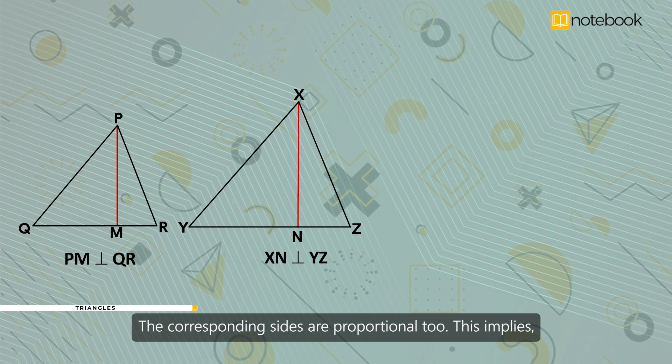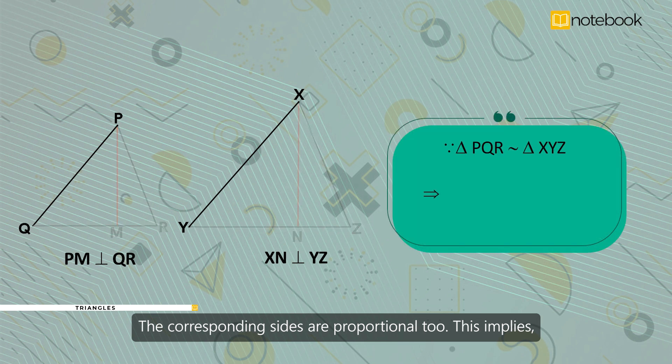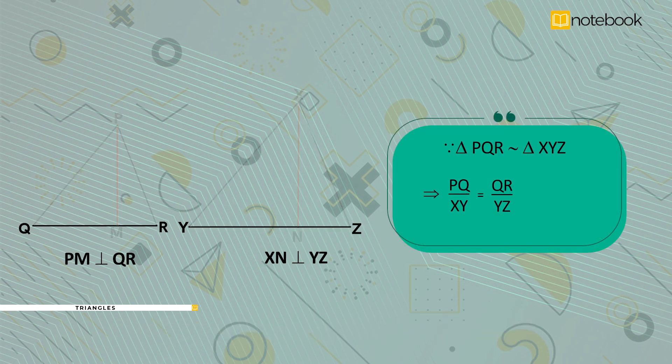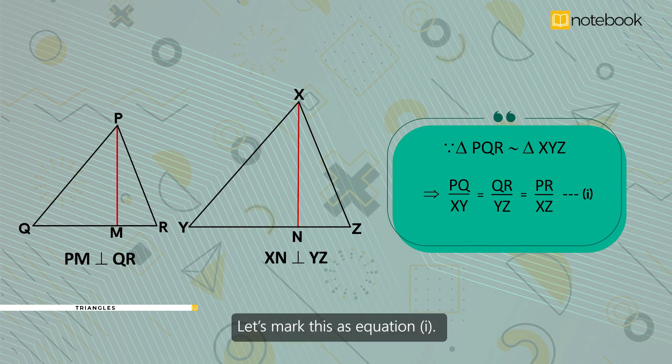The corresponding sides are proportional too. This implies PQ by XY is equal to QR by YZ is equal to PR by XZ. Let's mark this as equation 1.